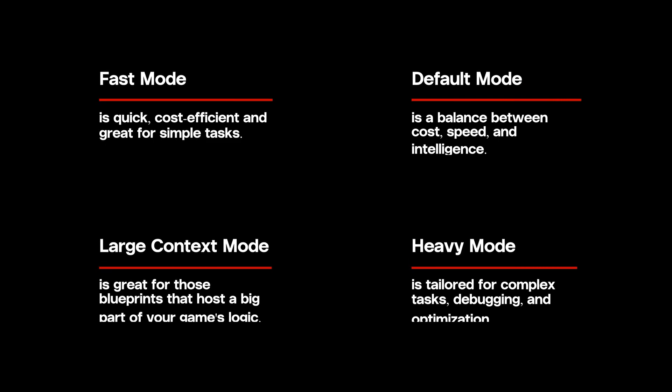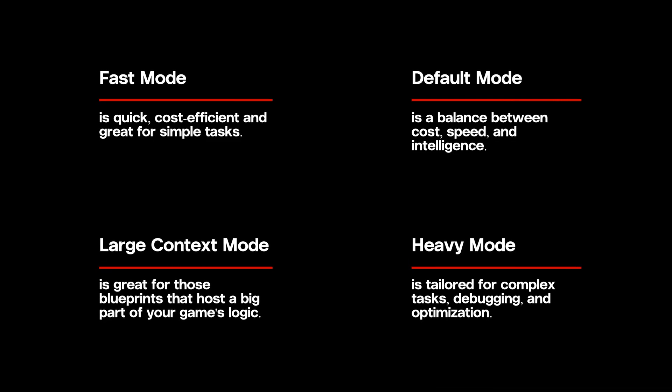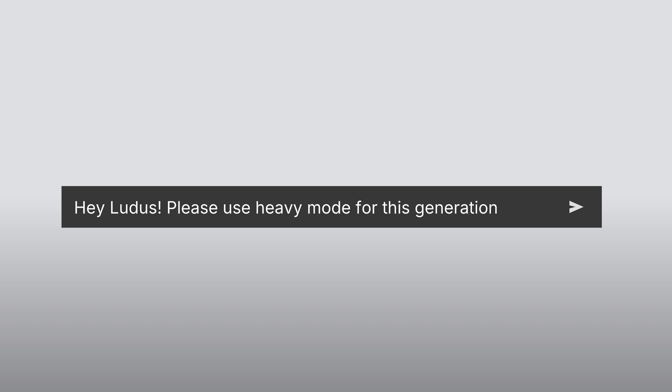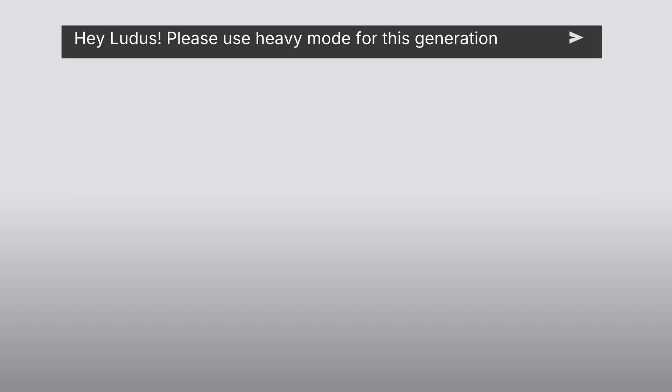It can be used in four available modes: Fast, Default, Large Context, and Heavy. You can see the purpose of each mode on the screen now. These modes are automatically activated by Ludoose based on the task or your prompt, making them especially useful for both large, complex blueprints and simple commands. You can also manually select a specific mode simply by asking Ludoose.